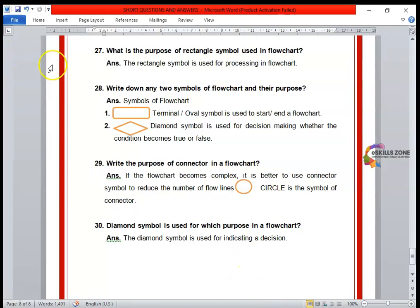Next question, number 28. Write down any two symbols of flowchart and their purpose. The answer is: Number one, terminal - oval symbol is used to start and end a flowchart. Number two, diamond symbol is used for decision making, whether the condition becomes true or false. So this diamond symbol is used for decision making whether the condition becomes true or false.